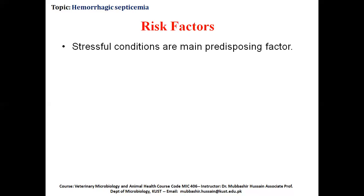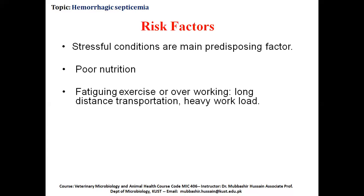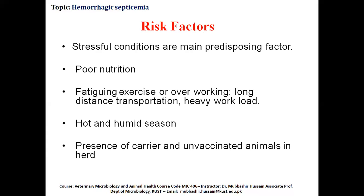Now we come to the risk factors. Stressful conditions are the main predisposing factor for this disease. These include poor nutrition, heavy workload or transportation, and the hot and humid monsoon season. If an animal is not fed properly, the immune system will not work properly, and exposure to an infected animal can cause disease. The presence of carrier and unvaccinated animals in herds also predisposes other animals to hemorrhagic septicemia.